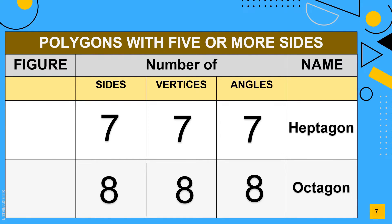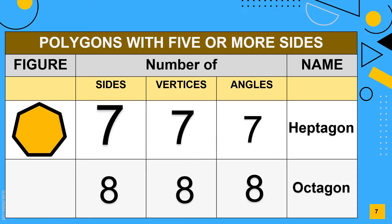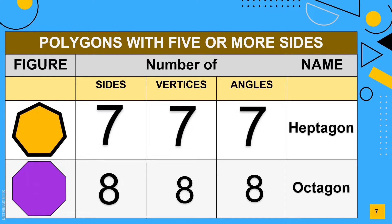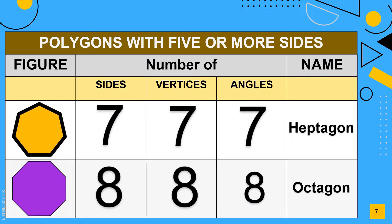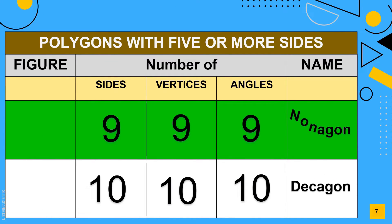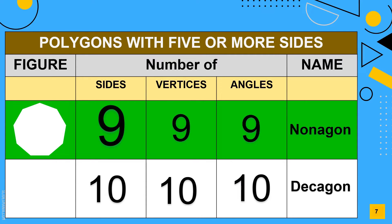A heptagon has 7 sides, 7 vertices, and 7 angles. An octagon has 8 sides, 8 vertices, and 8 angles. A nonagon has 9 sides, 9 vertices, and 9 angles.